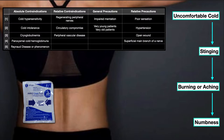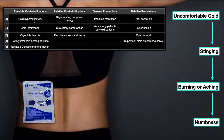The contraindications to cryotherapy include absolute and relative categories. The absolute contraindications — things you would never do regardless of where on the body you're applying cold — are cold hypersensitivity, cold intolerance, cryoglobulinemia, paroxysmal cold hemoglobinuria, and Raynaud's disease (also called Raynaud's phenomena). Cold hypersensitivity and cold intolerance are seen in conditions like sickle cell anemia. Those patients have lower tolerance of cold to begin with, and during a sickle cell crisis they become extremely susceptible to the effects of cold, so you would never use cryotherapy on them regardless of where it might otherwise be indicated.